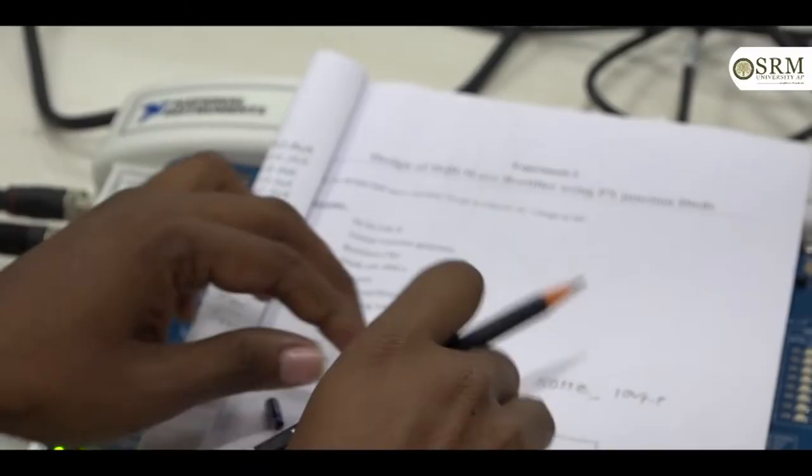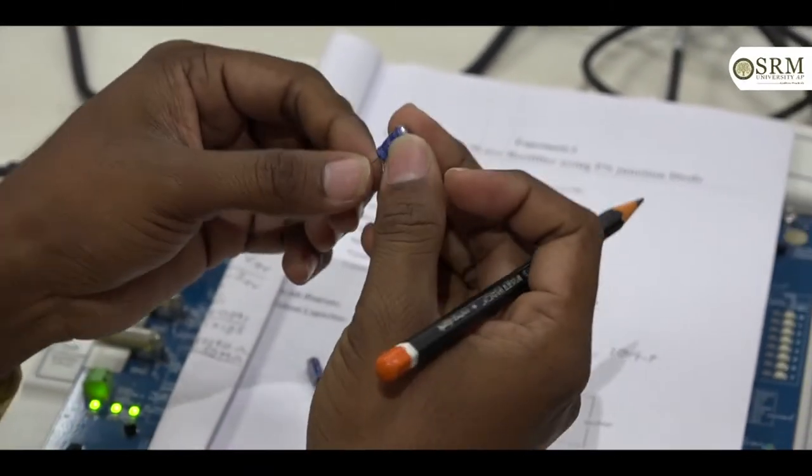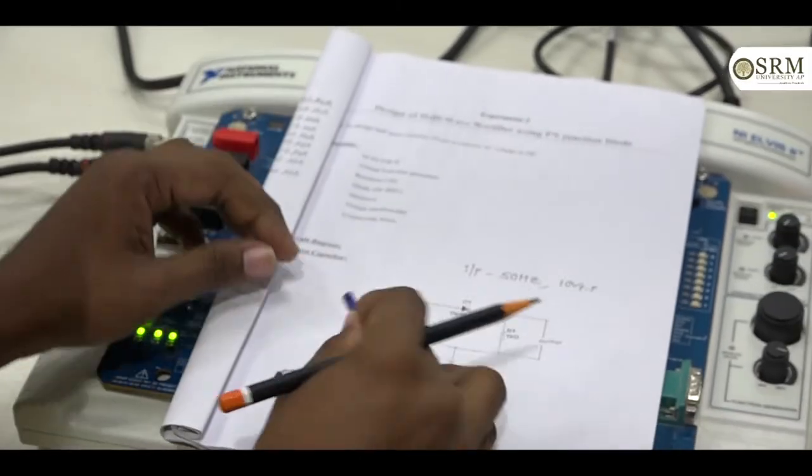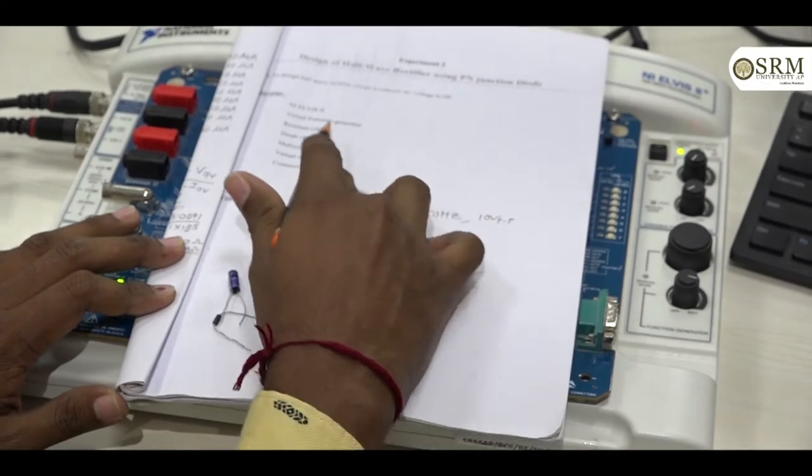And we have 1 kilo ohm resistor. And we have capacitors, 4.7 microfarads and 220 microfarads. For this, we need NILVS kit and resistors diode.